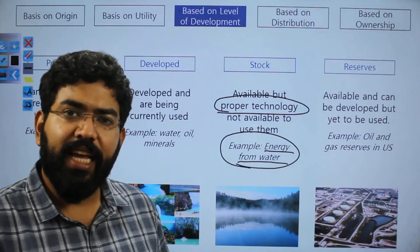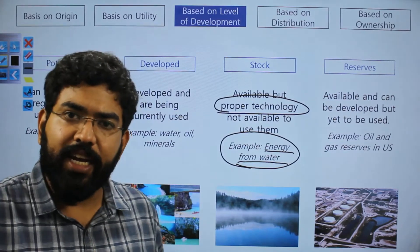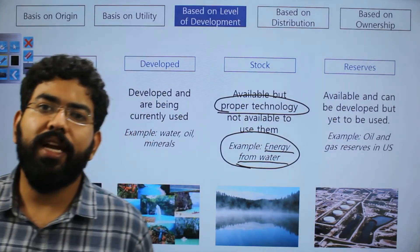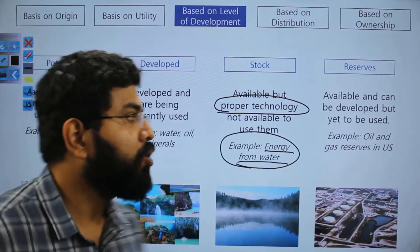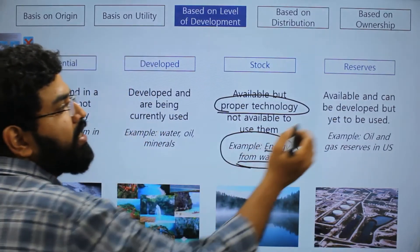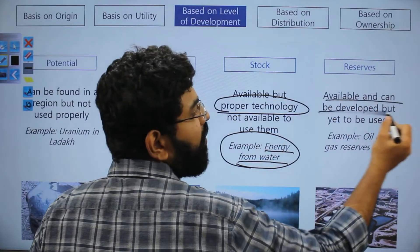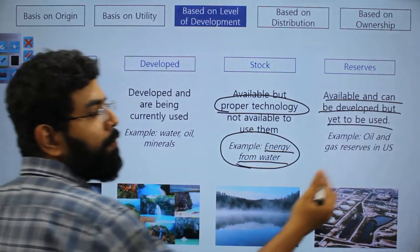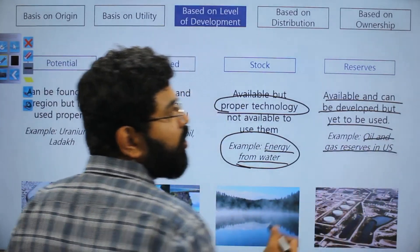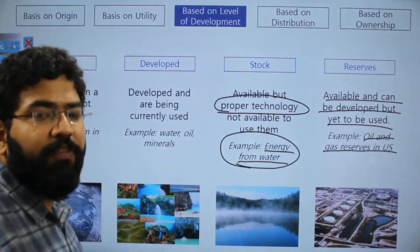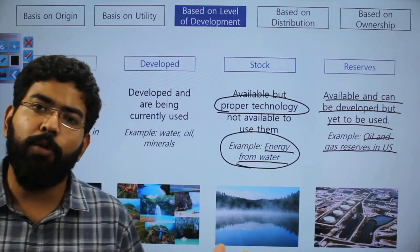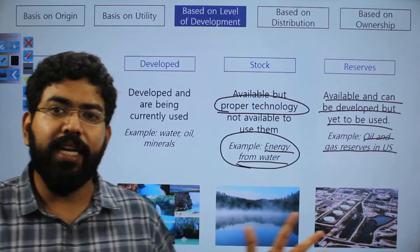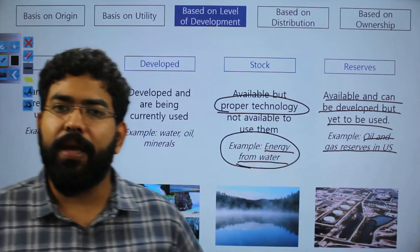Reserves are resources that can be developed with current technology, but we are not using them right now, citing future needs. They are available and can be developed but are yet to be used. An example would be oil and gas reserves in the US — they have plenty of gas reserves but still import from Saudi Arabia, making those reserves available for future use.